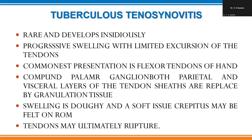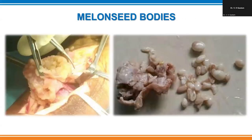Hematogenous spread can lead to granuloma formation within the tendon sheath. On palpation, the swelling is doughy in consistency, and a soft tissue crepitus can be felt. In long-standing cases, the tendons may rupture and the patient may lose hand function. During surgery for compound palmar ganglion, you remove the infected tendon sheath from the underlying tendons. Inside, you find multiple loose bodies called rice bodies or melon seed bodies — these result from villous proliferation of the synovial membrane, with villi separating due to repeated hand movement.